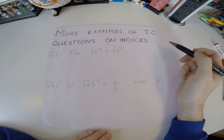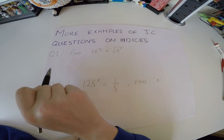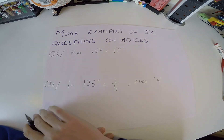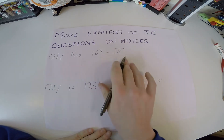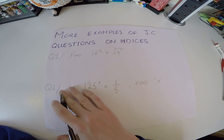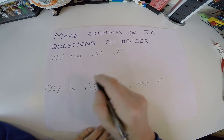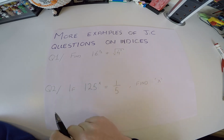These are more examples on junior search type questions on indices or powers. I'll go through solving some of these and we'll try and keep it nice and slow and easy so you can follow all the steps.